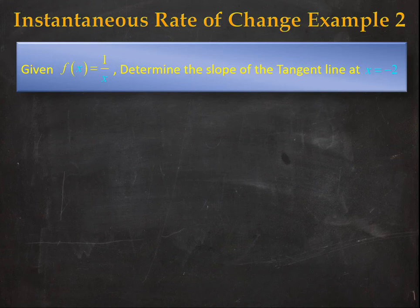In a previous example we looked at the interpretation of the instantaneous rate of change being a way of determining the instantaneous velocity when you're given a position function. Today's interpretation is using the instantaneous rate of change to determine the slope of a tangent line to a function at a specific point.